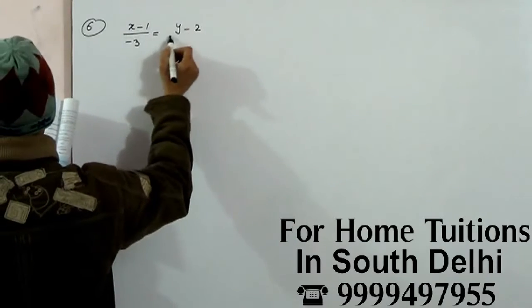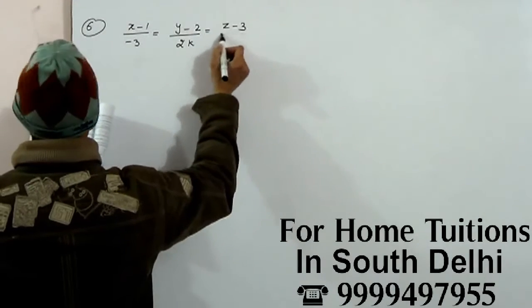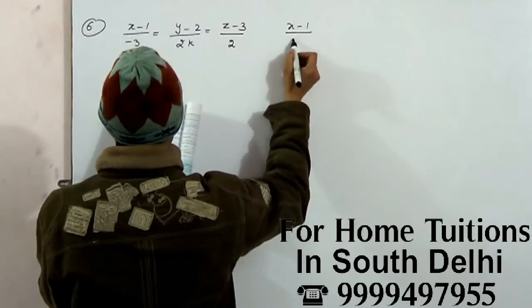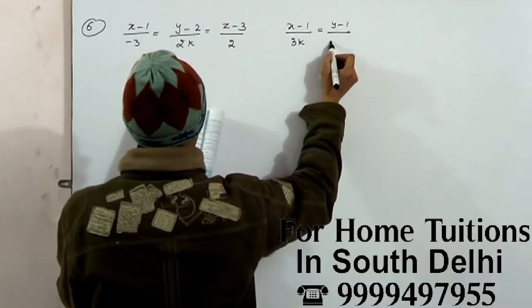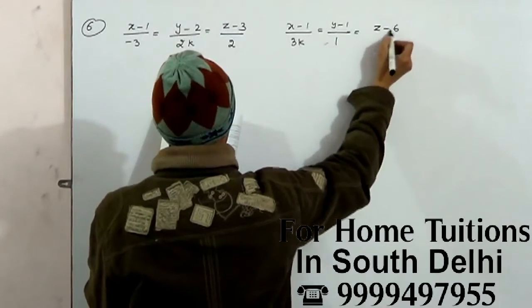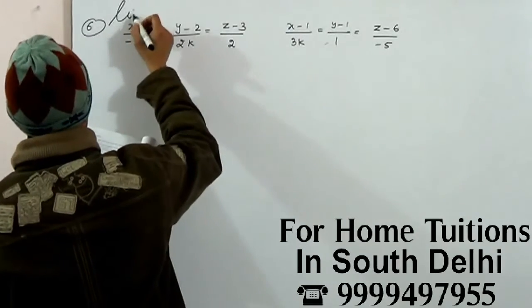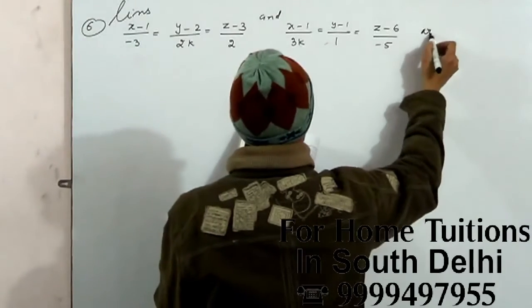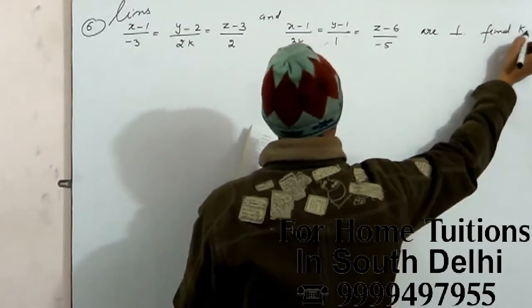y minus 2 upon 2k, z minus 3 upon 2, x minus 1 upon 3k, y minus 1 upon 1, z minus 6 upon minus 5. So, these lines, this and this are perpendicular, find k.